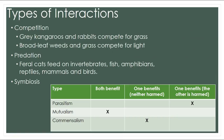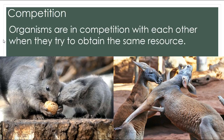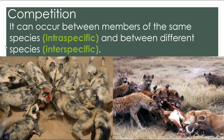Some of the interactions you will see in an ecosystem include competition, predation, and symbiosis. Predation is where one organism kills and eats another — the attacker, in this case the lion, is the predator, and the zebra is the prey. Competition is where organisms compete for the same resource. This can occur between the same species, like hyenas fighting over a carcass, and between different species, like hyenas competing with lions for a wildebeest.